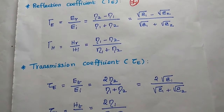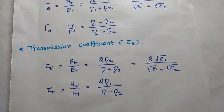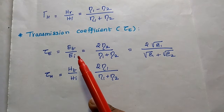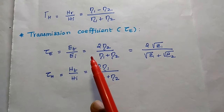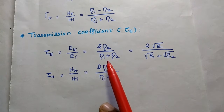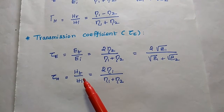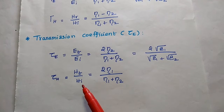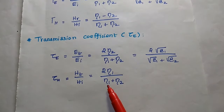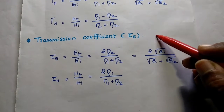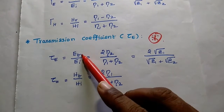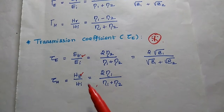So this reflection coefficient formula is very important. Similarly, the transmission coefficient — that means the ratio of the transmitted electric field to the incident field — can also be represented as 2 eta 2 by eta 1 plus eta 2. For the magnetic field, we have the ratio HT by H1, and in the numerator we have 2 times eta 1 by eta 1 plus eta 2. We are going to use these two formulas to find out the values of ET, HT, ER, and HR.